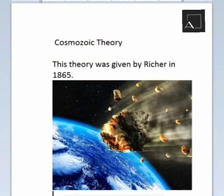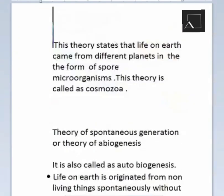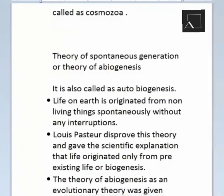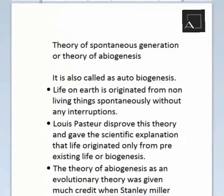Then came the cosmozoic theory, given by Richard in 1865. This theory states that life on Earth came from different planets in the form of spore microorganisms. The theory of spontaneous generation — also called abiogenesis — states that life on Earth originated from non-living things spontaneously, without any interruption.